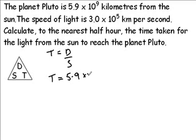So we have 5.9 times 10 to the power 9 divided by 3.0 times 10 to the power 5. Now we use our calculator to carry out this calculation and to remind you to put a number in standard form into the calculator we use the exp button.